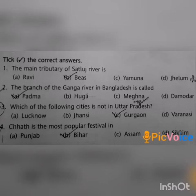First question: The main tributary of the Sutlej river is? Answer is option B: Beas.